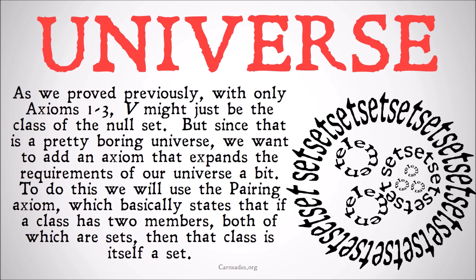To do this, we're going to use the pairing axiom, which basically states that if a class has two members, both of which are sets, then that class is itself a set.